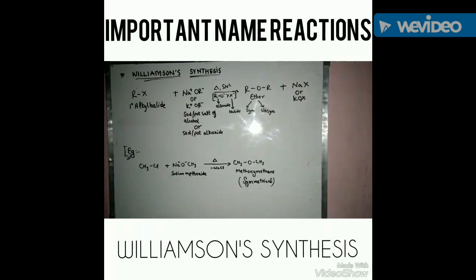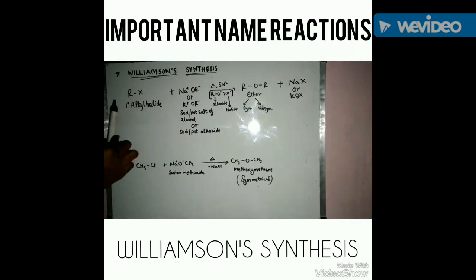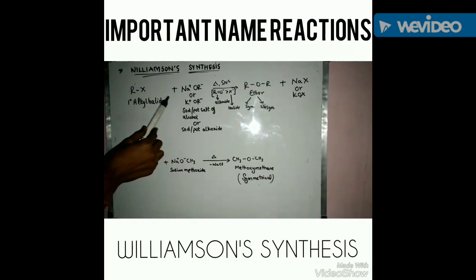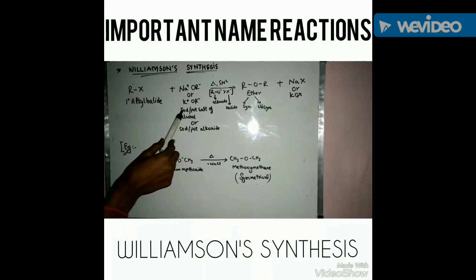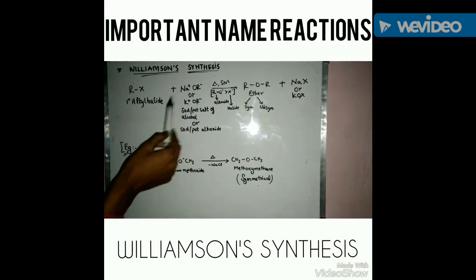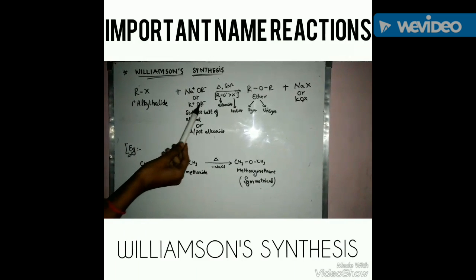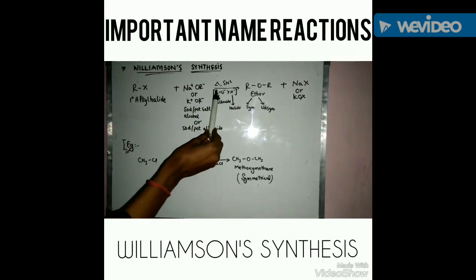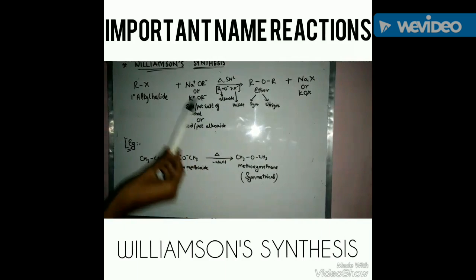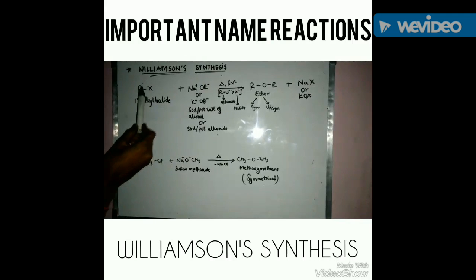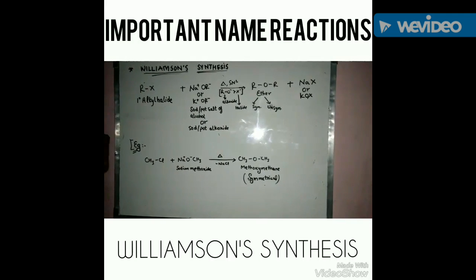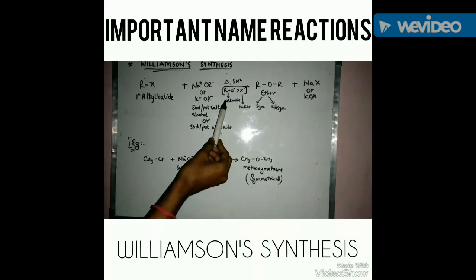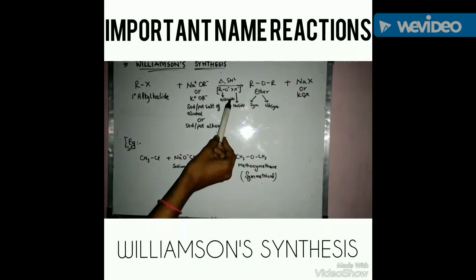Williamson Synthesis: In this process, ether is formed as the major product. A primary (1°) alkyl halide is reacted with NaOR, which is the sodium salt of alcohol or sodium alkoxide, or alternatively KOR, the potassium salt of alcohol. This reaction proceeds through an SN2 mechanism, which is one of the key features of Williamson synthesis.